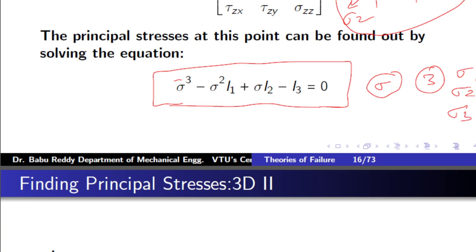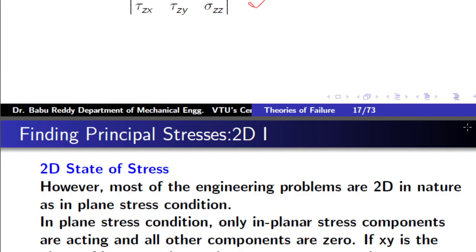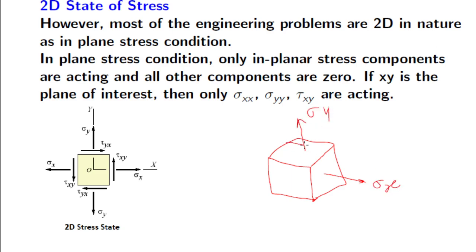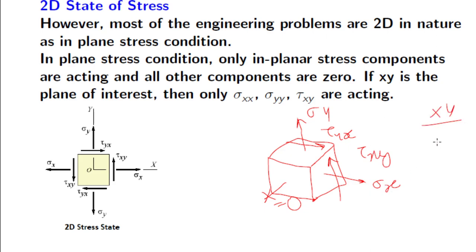That is the most general case where all stress components are acting, but most of the time we will focus on the 2D state of stress. The 2D state of stress involves a cubical element with sigma x, sigma y, and shear stresses tau xy and tau yx acting on it, while the stress on the z-face is zero. When such a situation exists, we say the body is under a 2D state of stress — all stresses are confined to a single plane, in this case the xy plane.